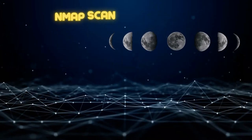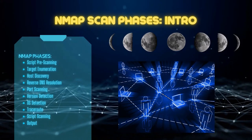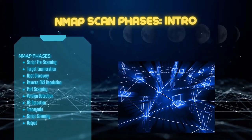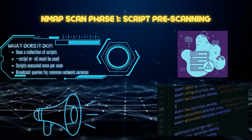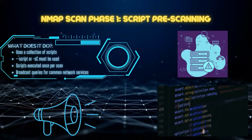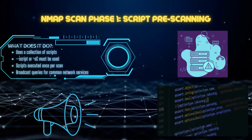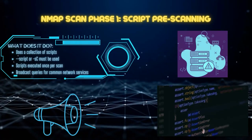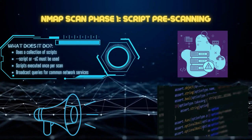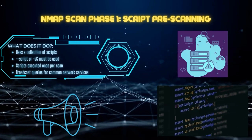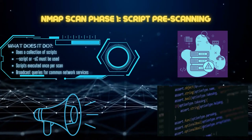Nmap is a powerful tool used for network exploration and security auditing, and it follows a series of phases when executed. Phase one is script pre-scanning. Nmap performs a script pre-scanning phase during which the Nmap Scripting Engine, or NSE, uses a collection of specialized scripts to gather more detailed information about remote systems. This phase is only executed if requested with options like --script or -sC. During the pre-scan phase, Nmap runs only scripts that require it, such as DHCP discover or broadcast DNS service discovery, executed once per Nmap execution using broadcast queries.